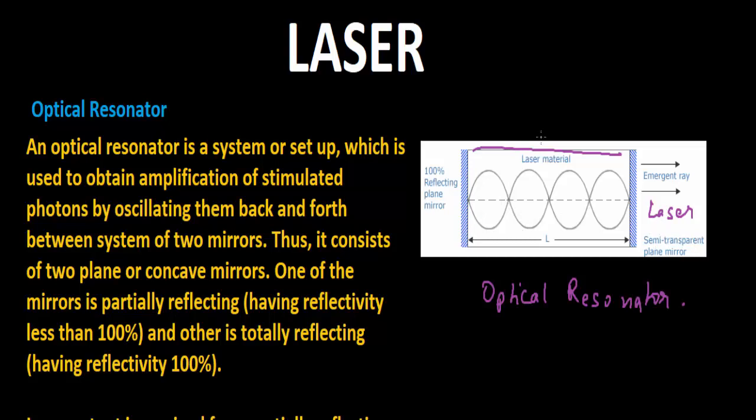Finally, it is transmitted through the semi-transparent mirror. An optical resonator is a device that directs photons back and forth through the laser medium. The number of photons get multiplied by stimulated emission to achieve coherent laser radiation. If optical resonator is not present, then no laser light generation is possible.